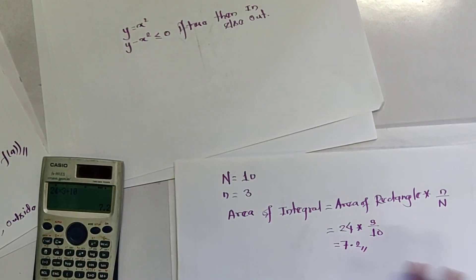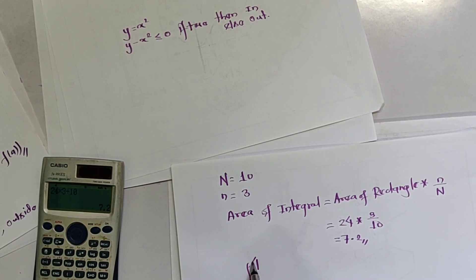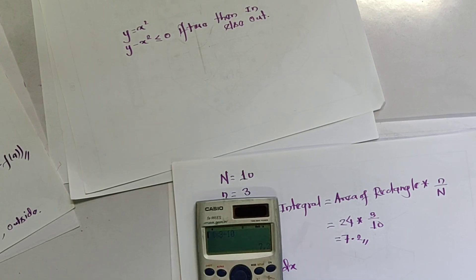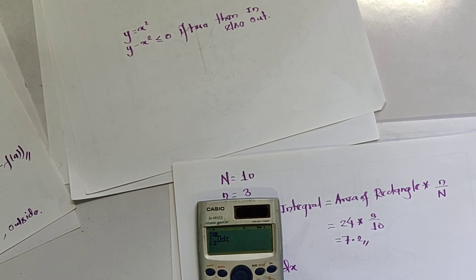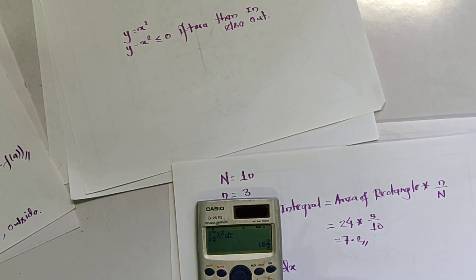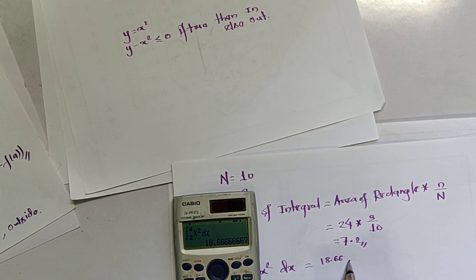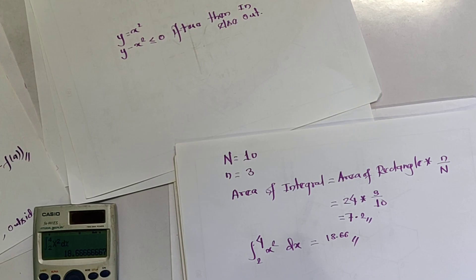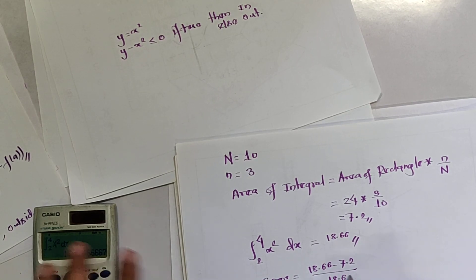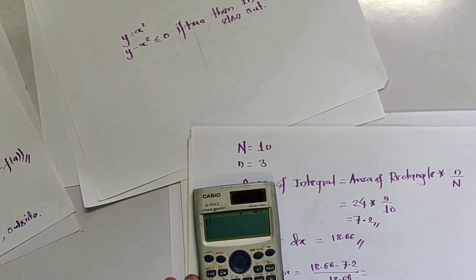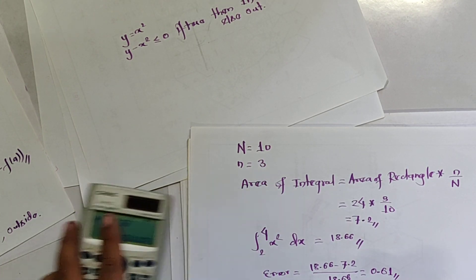Let us calculate the actual value of the integral from 2 to 4 of x squared dx. The actual value works out to 18.66. Now let us calculate the error: error = (18.66 − 7.2) / 18.66 = 0.61, which is a 61% error. The error will be minimized if we take up to 20 or more random numbers.